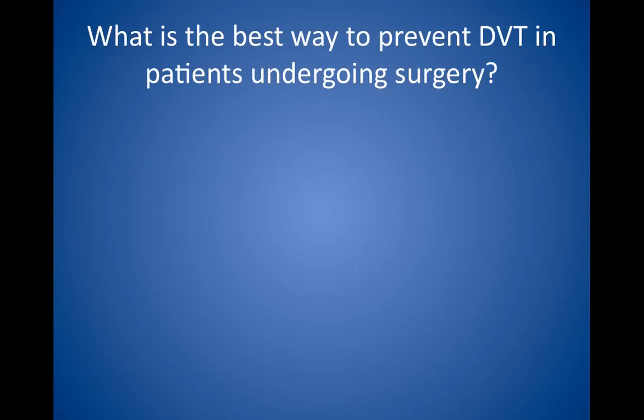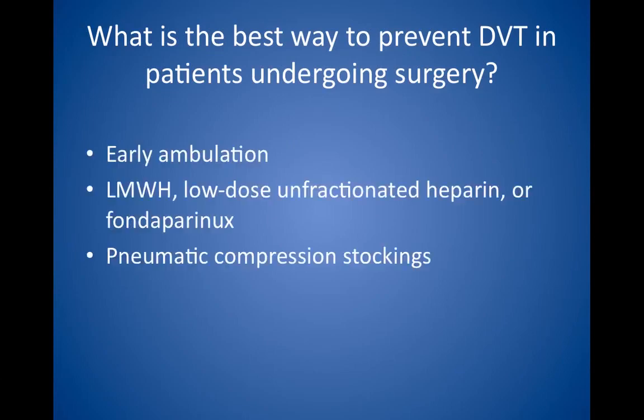What is the best way to prevent DVT in patients undergoing surgery? Prophylactic measures depend on the risk for developing DVT or PE. Early ambulation is recommended for low-risk patients. Low molecular weight heparin, low-dose unfractionated heparin, or fondaparinux is recommended for patients at moderate risk. High-risk patients should be given low molecular weight heparin, fondaparinux, or an oral vitamin K antagonist. Alternatively, pneumatic compression stockings should be used if the patient is at moderate risk or higher and is at high risk for bleeding.